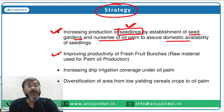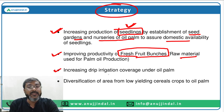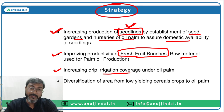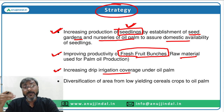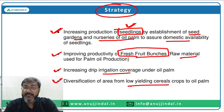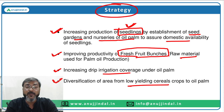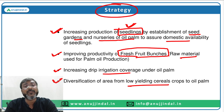Number two: the government will improve productivity of fresh fruit bunches — these are the raw materials used for palm oil production. Number three: the government will increase drip irrigation coverage under oil palm cultivation — wherever oil palm is grown, drip irrigation access will be expanded. Number four: diversification of area from low-yielding cereal crops to oil palm — wherever cereals are low-yielding, oil palm will be grown instead. This strategy will be followed to enhance edible oil production across the country.